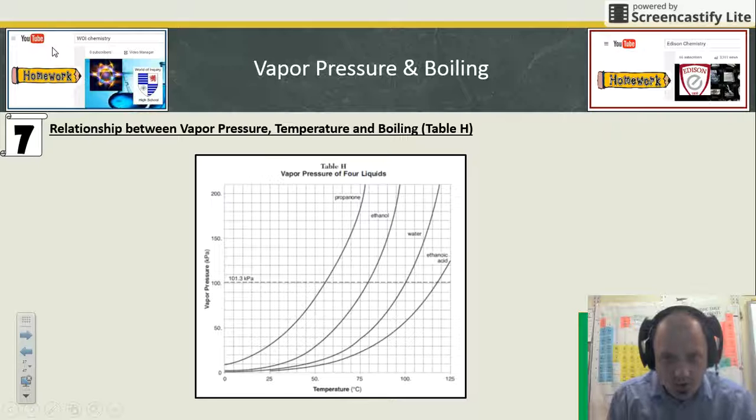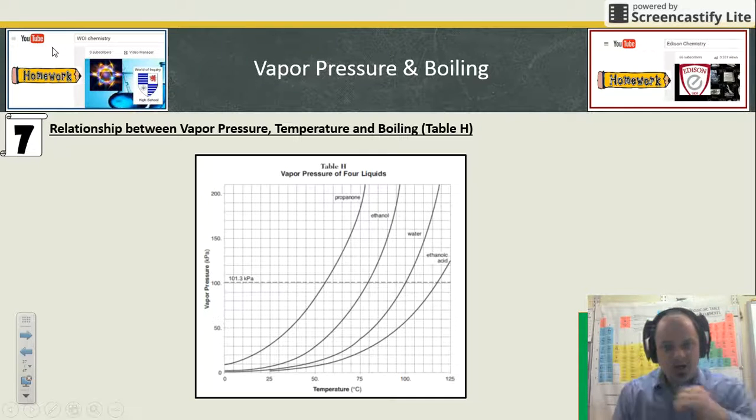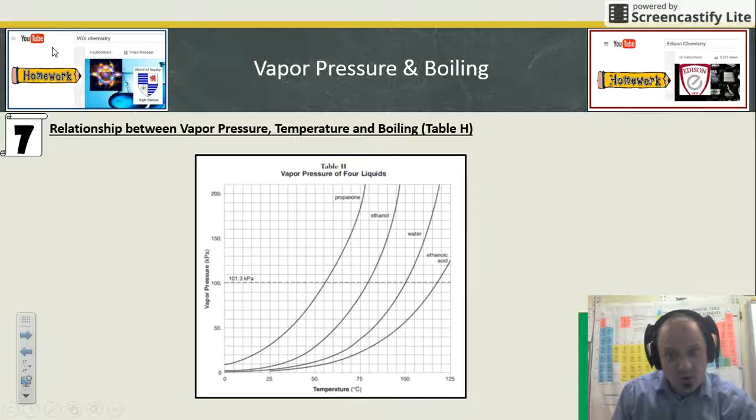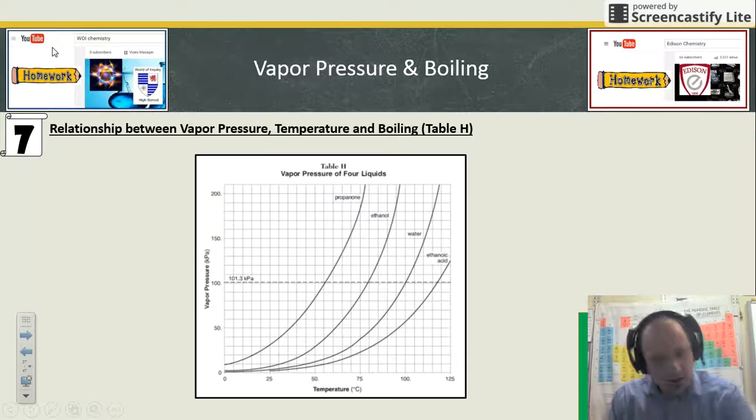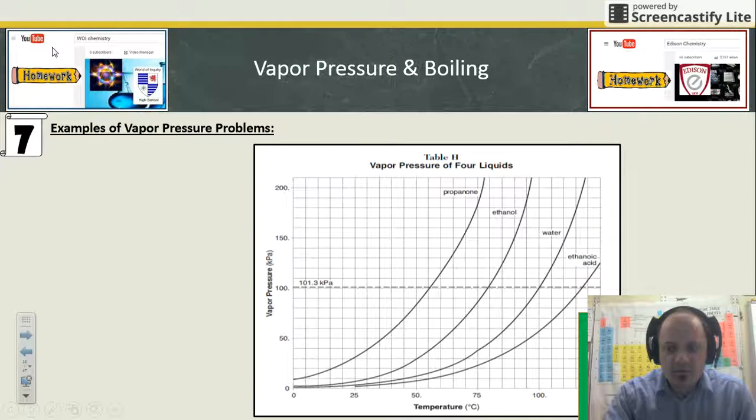That is what reference Table H is trying to show us. These curves, as they increase—as the temperature of the liquid increases—the pressure it puts off increases as well. So it's a direct relationship: logarithmic but direct.